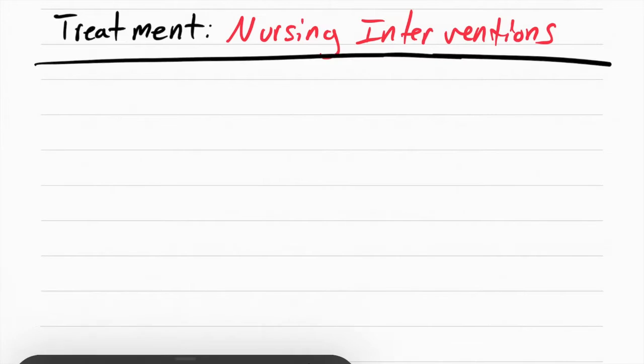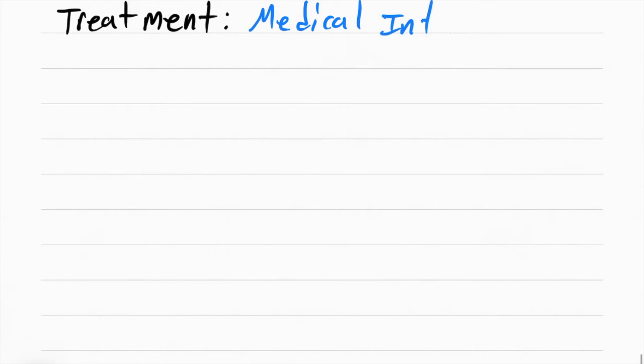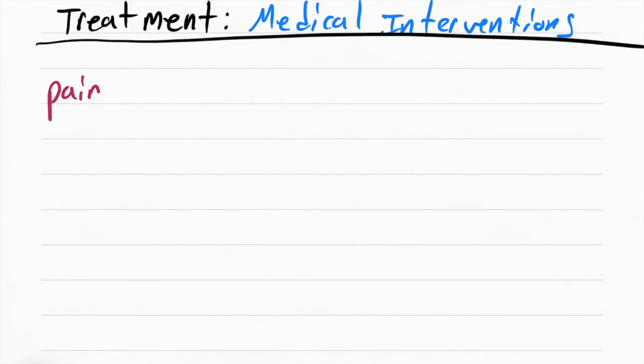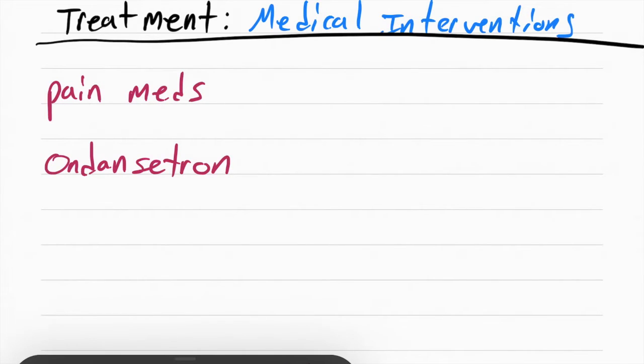The treatment for cholecystitis is to initially make the patient NPO. The reason we make the patient NPO is to rest their GI. If they eat food, then their gallbladder is going to want to release more bile, which it can't and cause further inflammation. After making the patient NPO, what we want to do next is have proper pain control, give a medication called ondansetron, which is an anti-emetic used to stop nausea and vomiting, and we want to prepare the patient for surgery.